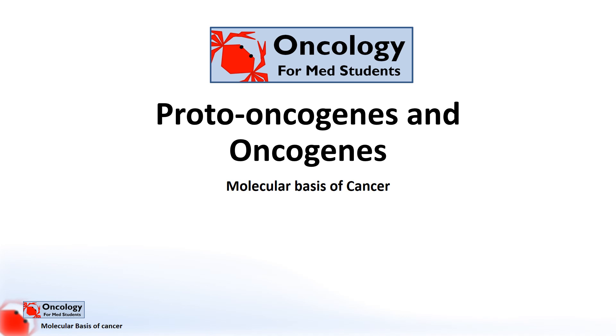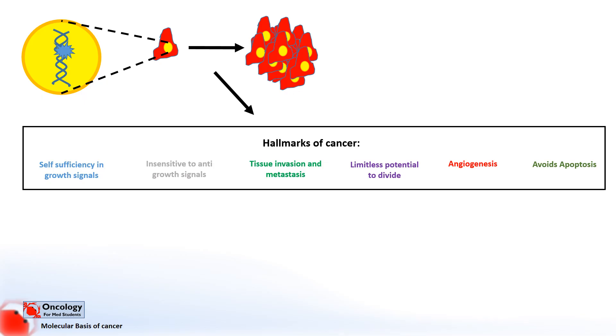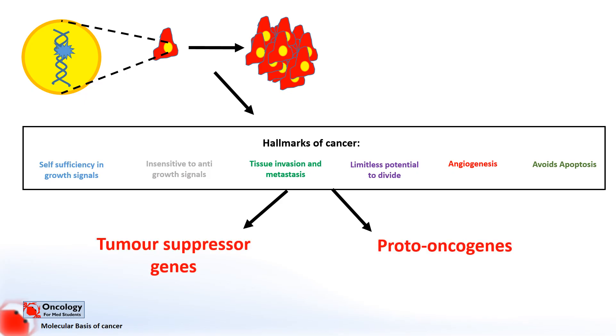Hello and welcome back to Oncology for Medical Students and this section of videos on the molecular basis of cancer. This video will cover proto-oncogenes and oncogenes. In previous videos we've talked about how cancers develop as a result of mutations to DNA, how these changes lead to the production of faulty proteins and how these proteins give the cells certain characteristics known as the hallmarks of cancer. We've also talked about how the genes involved in these changes can be divided into two groups: tumor suppressor genes, covered in the last video, and proto-oncogenes.